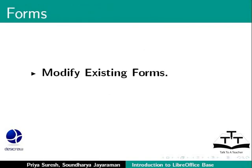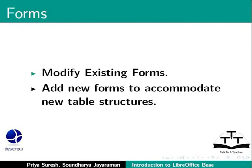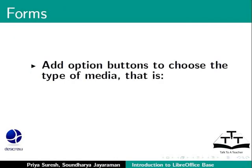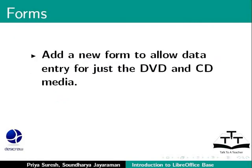Along with table changes, we will also need to modify the forms to make them easier to use. Or, we can build new forms to accommodate new table structures. For example, if we had a form to enter books data, we can modify it to allow data entry for DVDs and CDs also. Here, we could add option buttons to choose the type of media — books, DVDs, or CDs. Or, we can add a brand new form to allow data entry for just the DVD and CD media.